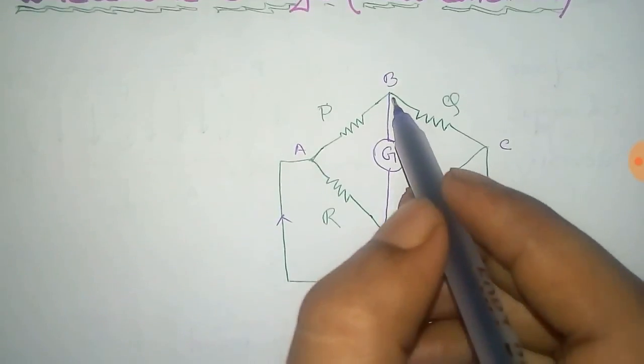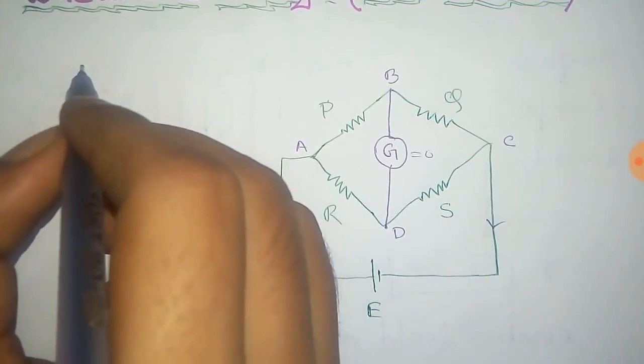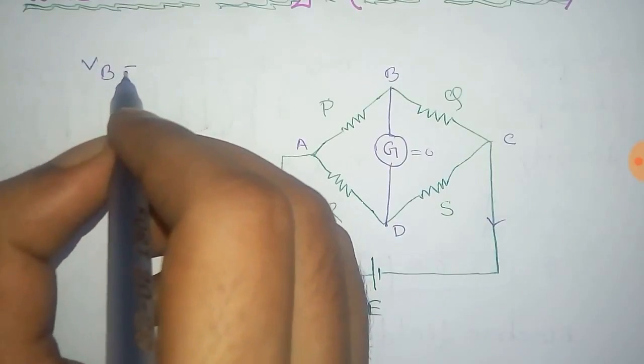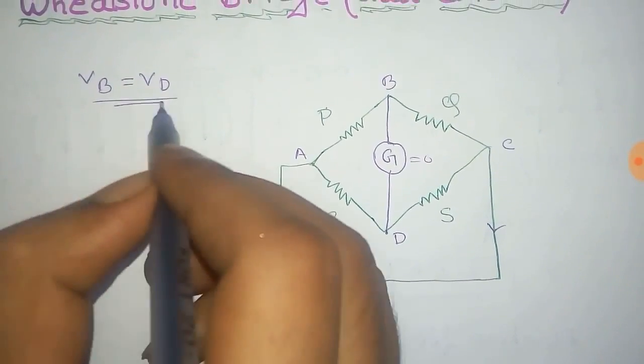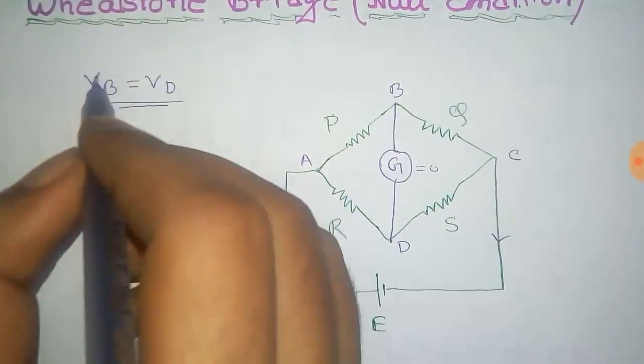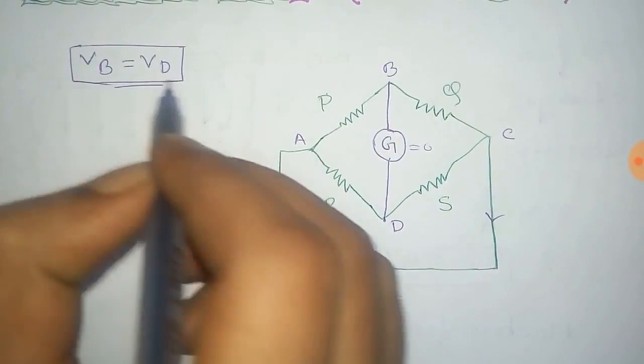For this, the potential at point B and point D would be the same because there is no current. So VB is equal to VD. That is, the potential at these two points are same, and this is the null condition.